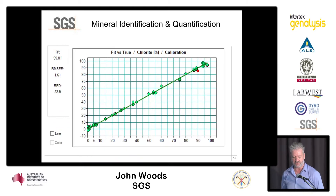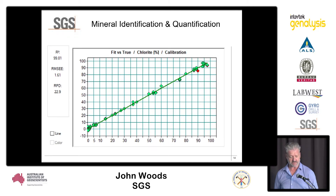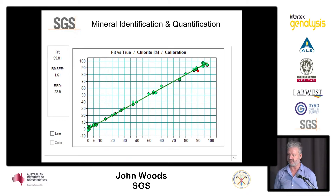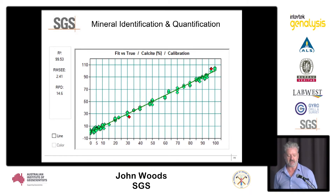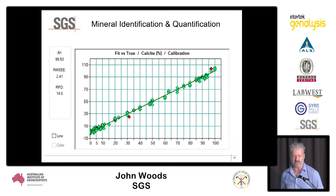In terms of typical calibration quality, here is an example for chlorite, which can be a tricky clay mineral. You can see that typically our R-squared values are greater than 99, so you have a pretty high degree of confidence that the quantification values given are correct. This holds across a wide range of other minerals — for example, this is a typical calibration line for calcite, where again R-squared values are in excess of 99.